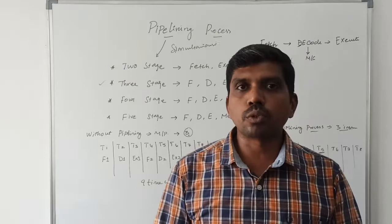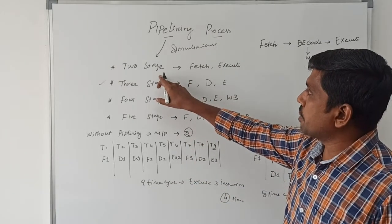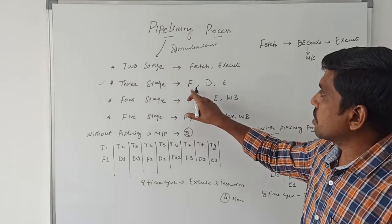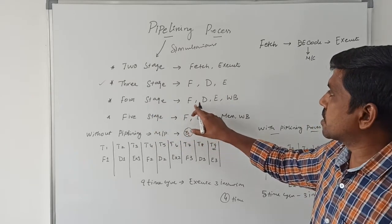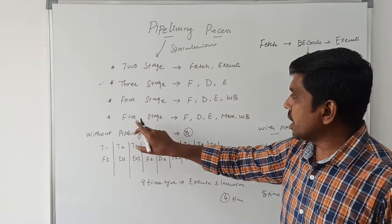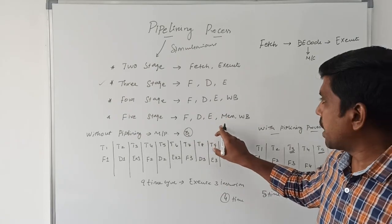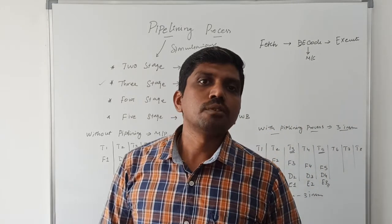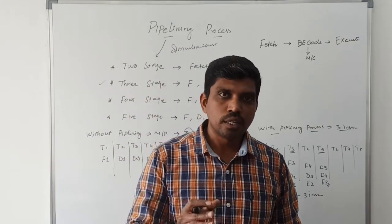So using two-stage pipelining you apply fetch and execute; three-stage pipelining adds fetch, decode, execute; four-stage adds fetch, decode, execute, and write back; five-stage adds fetch, decode, execute, memory access, and write back. I hope you understand the concept very well. If you have not subscribed to my channel, kindly subscribe and support us. Thank you.